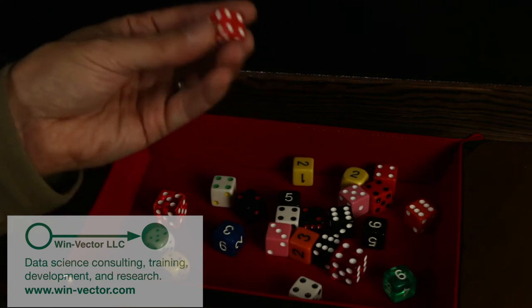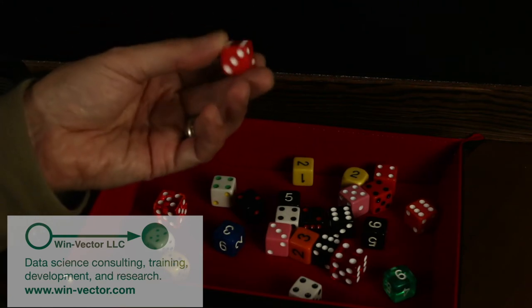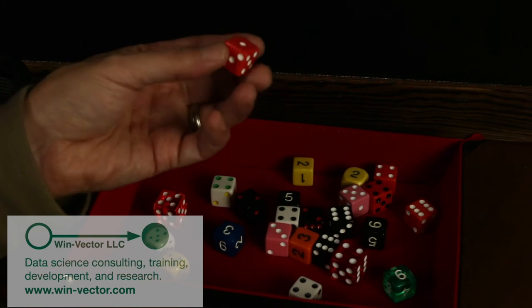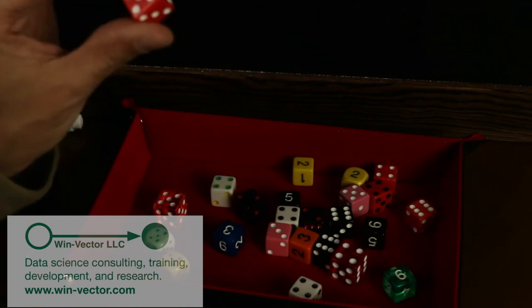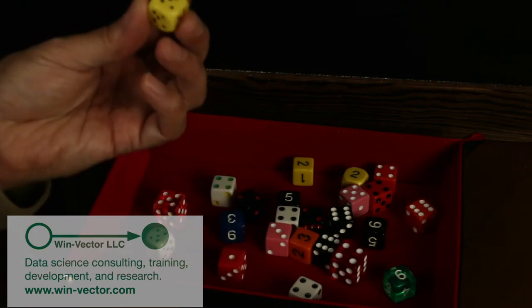And in fact, on average, it's unprofitable. Because the expected value of number of pips is 3.5, and we said the cost of rolling the die is four. So on average, these are unprofitable deals. These are profitable deals.